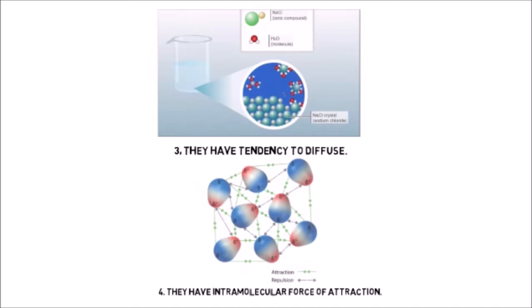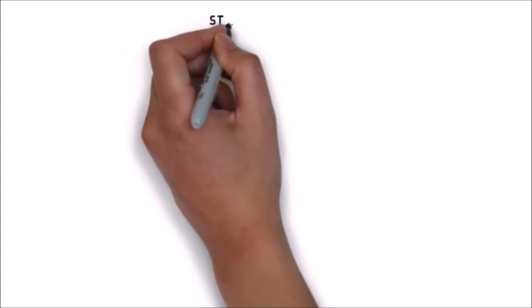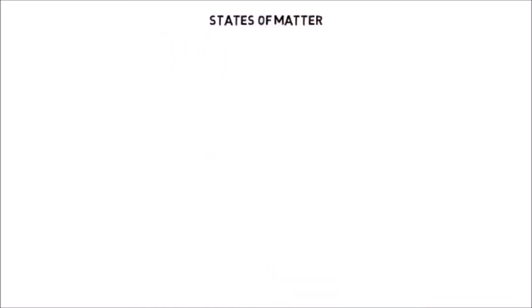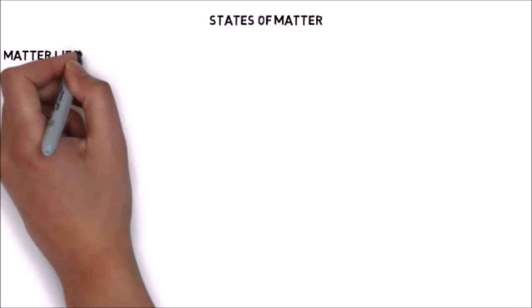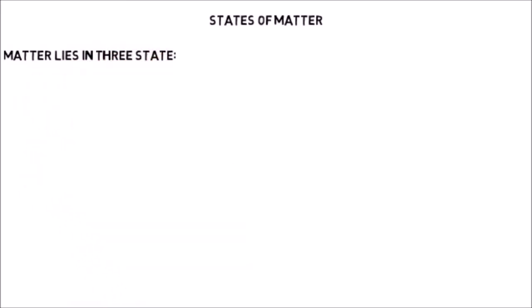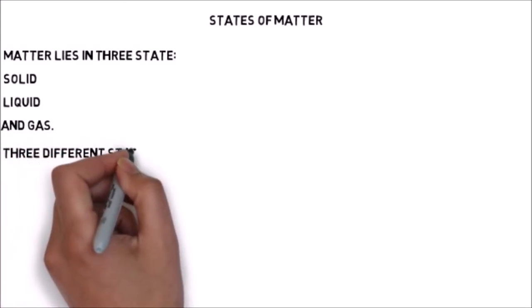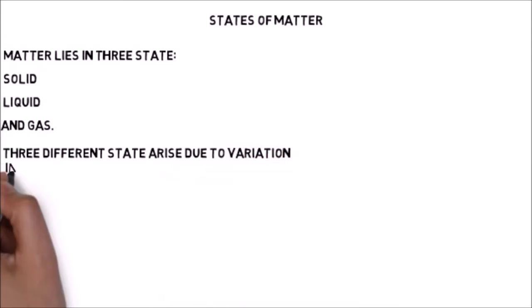Number 4: Particles of matter attract each other. So these are the four characteristics of particles of matter. Now we will discuss about the different states of matter. Matter exists in three states: solid, liquid, and gas. These three different states arise due to variation in the characteristics of particles of matter.